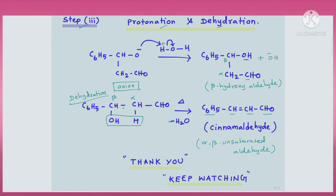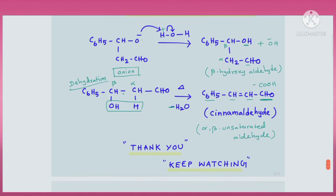In the previous video we discussed Perkin's reaction, where in place of CHO we have COOH and the product is cinnamic acid. Here we have an aldehyde group CHO so it is called cinnamaldehyde. This completes the mechanism of the Claisen-Schmidt reaction. I hope you understood the mechanism of the Claisen reaction. Thank you and keep watching all my videos.